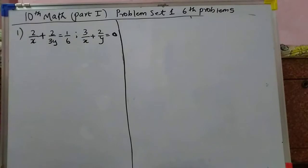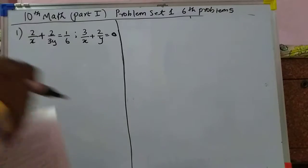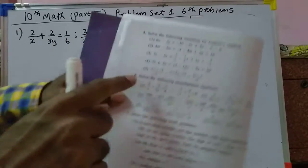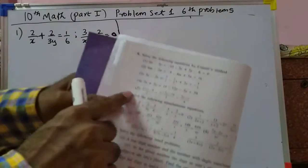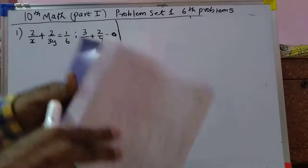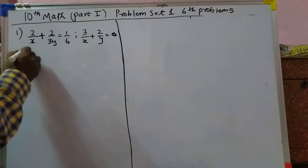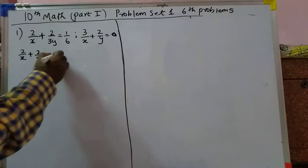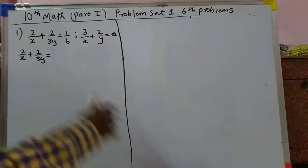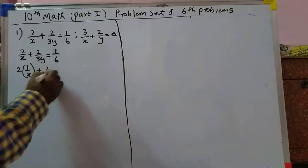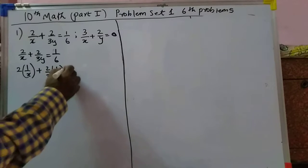Problem Set 1, six problems, Current Mathematics Part 1, Standard 10, page number 28. First we have to write the problem properly. We have to write 2 by x plus 2 upon 3y is equal to 6, which is actually 1 by 6. So properly written: 2 into 1 by x plus 2 by 3 into 1 by y is equal to 1 by 6.